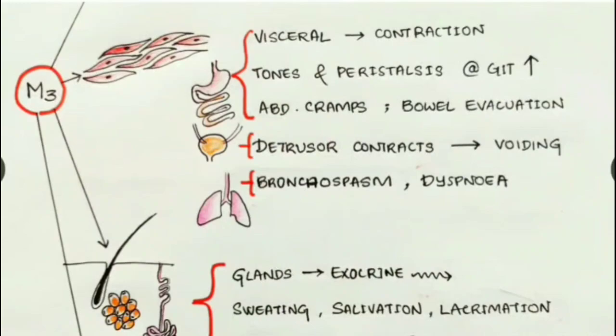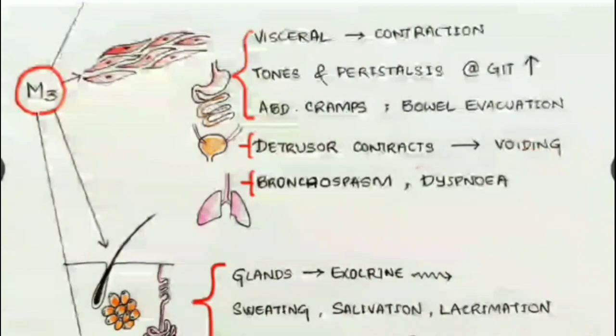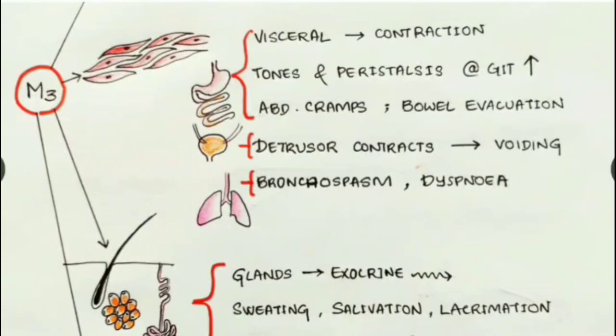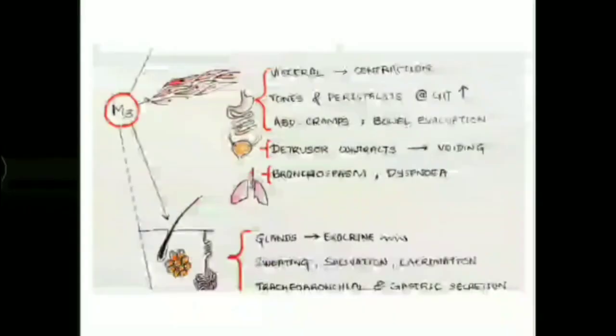Smooth muscles stimulated at the urinary bladder, mainly the detrusor muscle, cause detrusor contraction and voiding of urine. M3 receptors located at the lungs on the smooth muscles of the tracheobronchial tree cause bronchospasm and dyspnea.